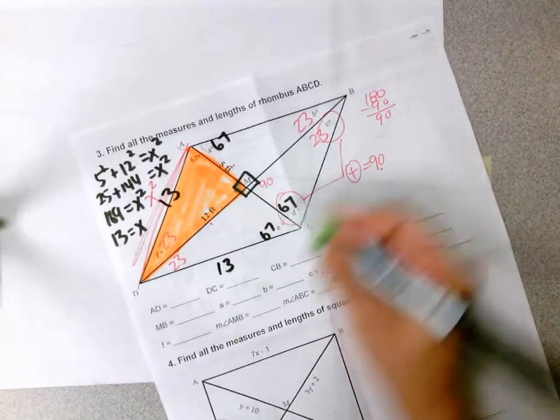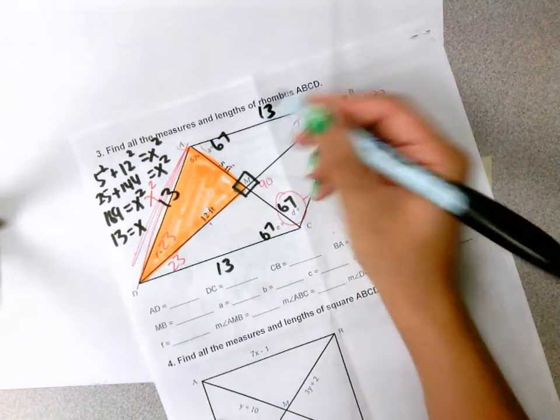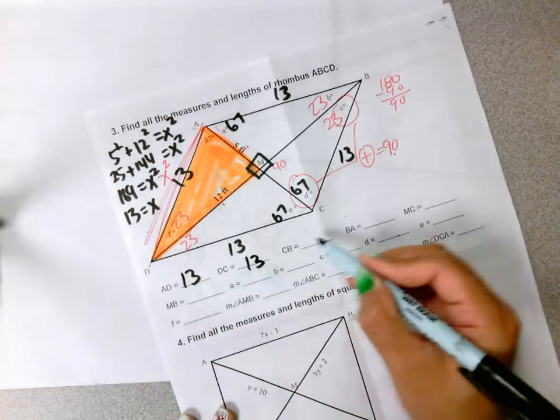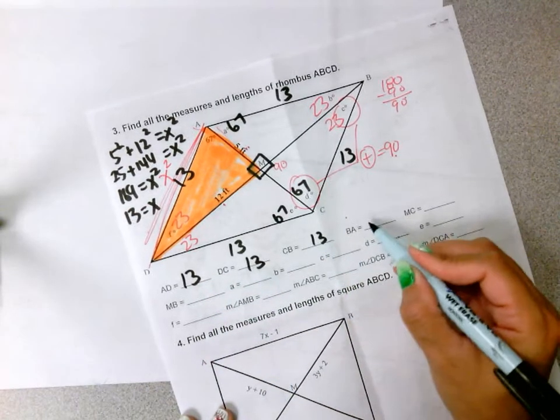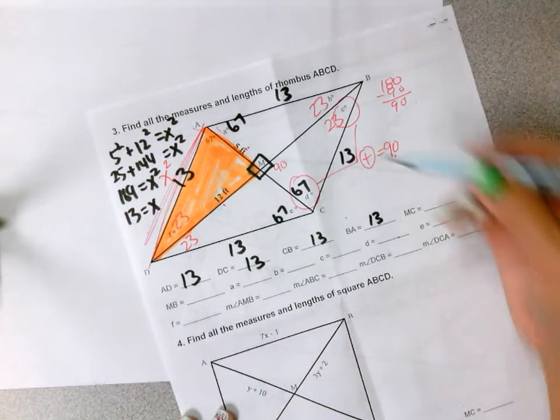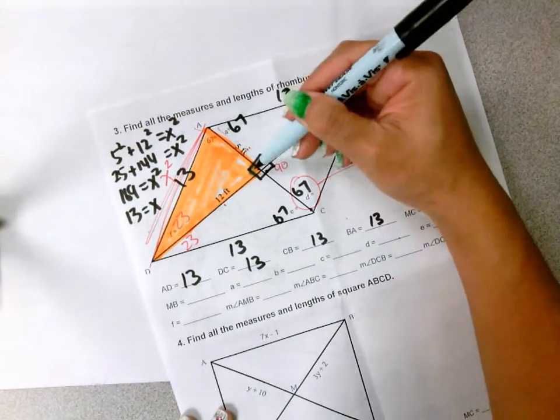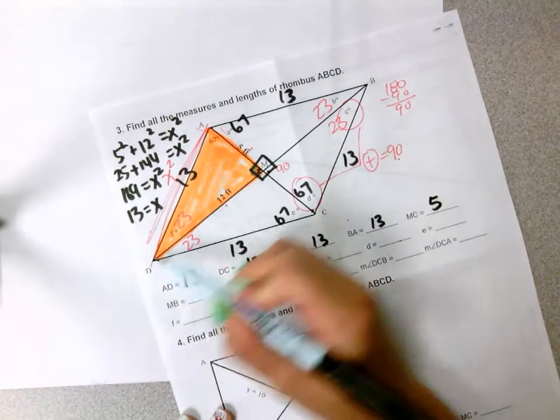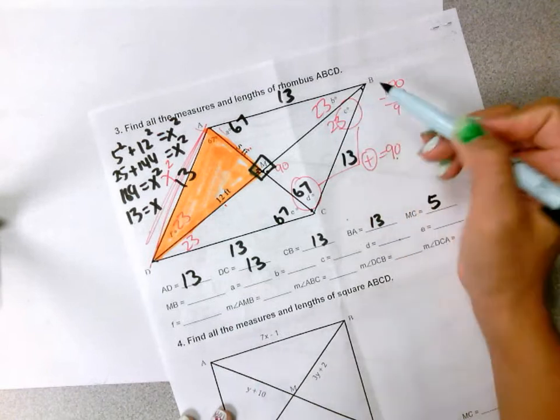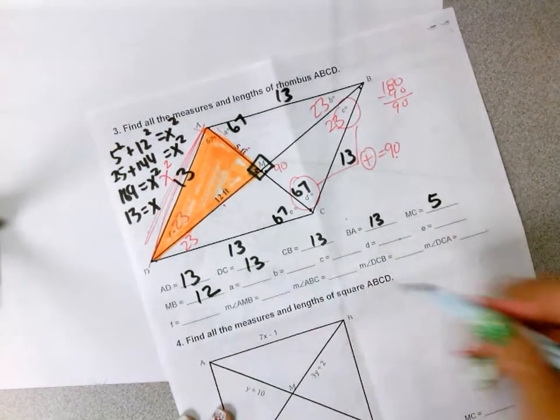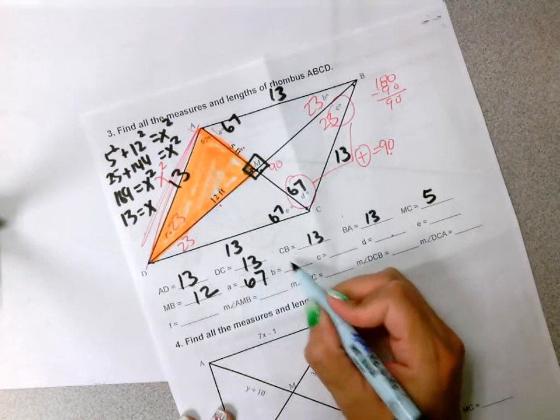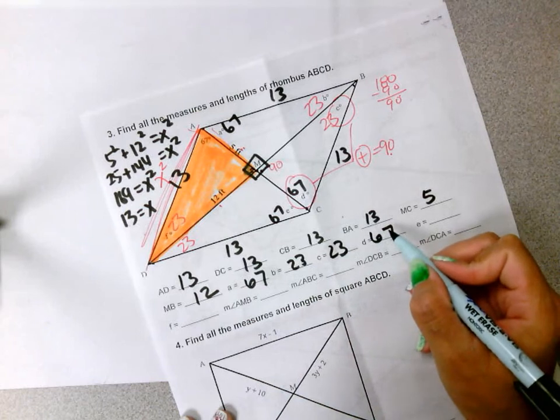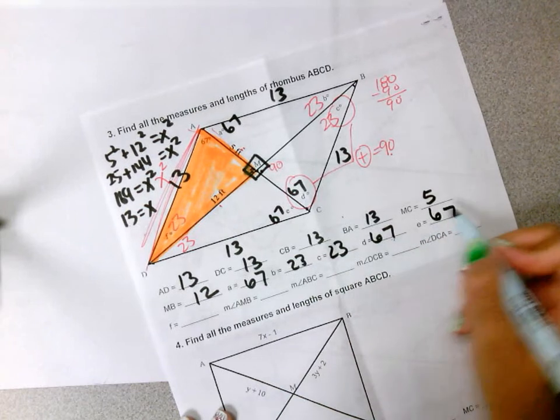So, if this one is 13, this one must be 13, 13, and 13. So, from here out, it's easy to answer the question. A to D is 13, D to C is 13, C to B is 13, B to A is 13, M to C is next. M to C, M, A to M is 5, M to C is also 5. M to D is 12, M to D is 12, M to D is also 12. Angle A, as we have it already, 67, 23, 23, 67, E is 67, F is 23.